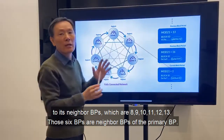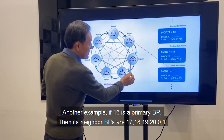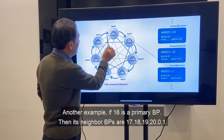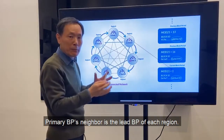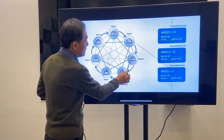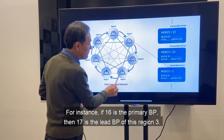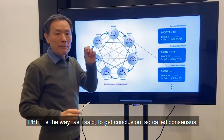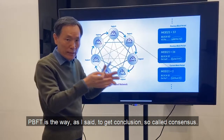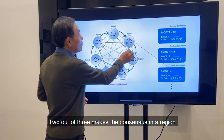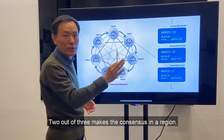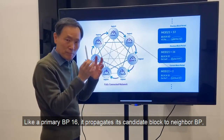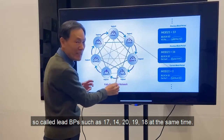Those neighboring BPs are the lead BPs of each region. For example, if BP16 is the primary BP, its neighboring BPs — 17, 18, 19, 20, 14, 15 — are the lead BPs. The primary BP propagates its candidate block to these neighbor lead BPs at the same time, and the lead BP is responsible for getting conclusion, or consensus, within its region.